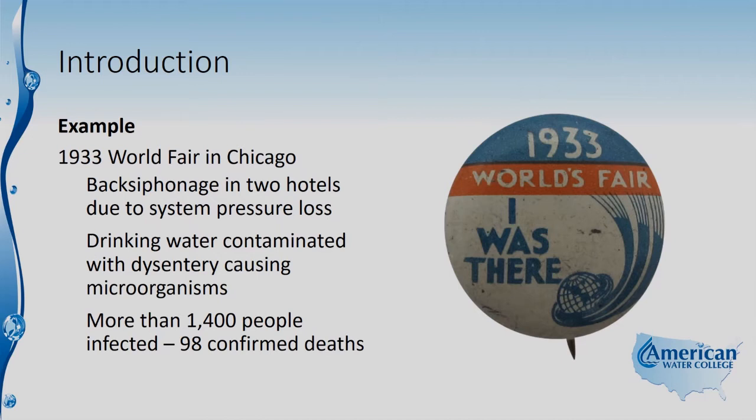An example of a cross connection that caused an outbreak of disease happened in 1933 at the World Fair in Chicago. There was back siphonage in two hotels due to system pressure loss. The drinking water was contaminated with dysentery-causing microorganisms, and more than 1,400 people were infected.